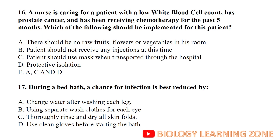A nurse is caring for a patient with a low white blood cell count who has prostate cancer and has been receiving chemotherapy for the past five months. Which of the following should be implemented for this patient? There should be no raw fruits, flowers, and vegetables in his room. The patient should use a mask when transported, and protective isolation should be implemented.